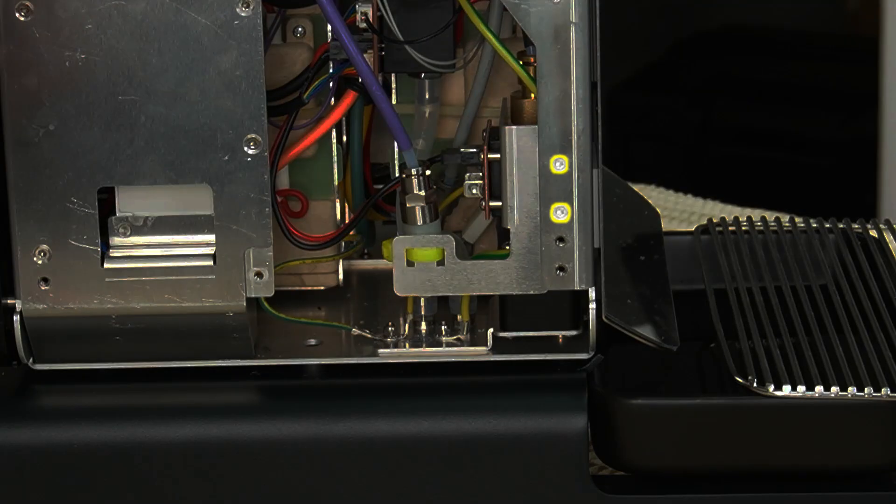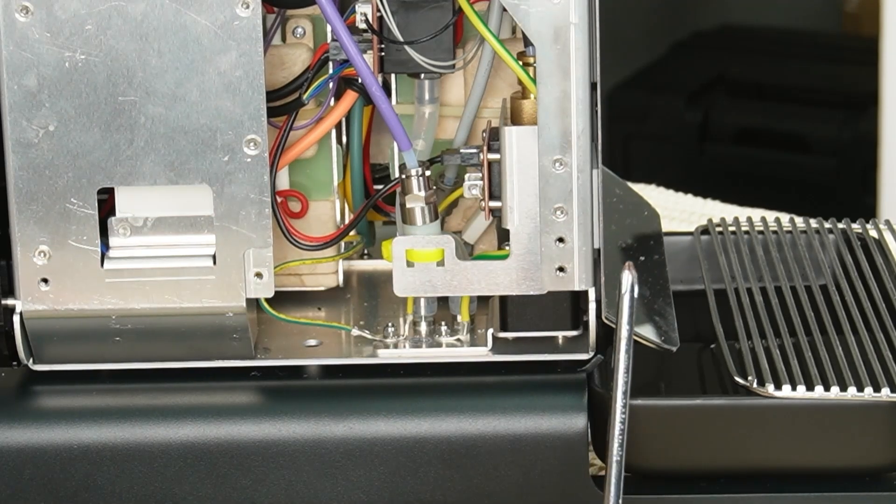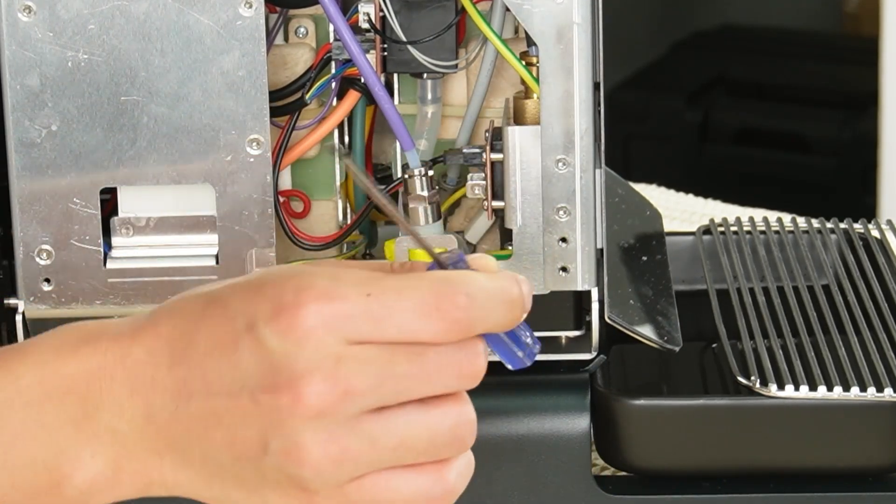Start by removing the two screws that hold the drain valve mount. You can use either a PH2 or T10 screwdriver by the screw type.